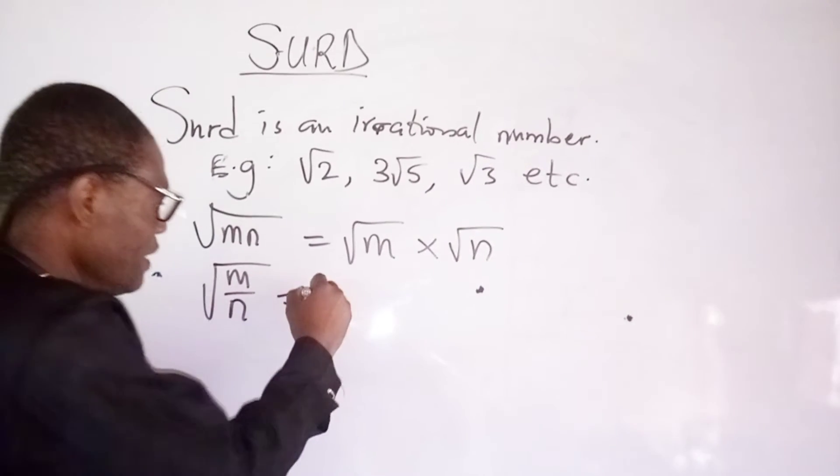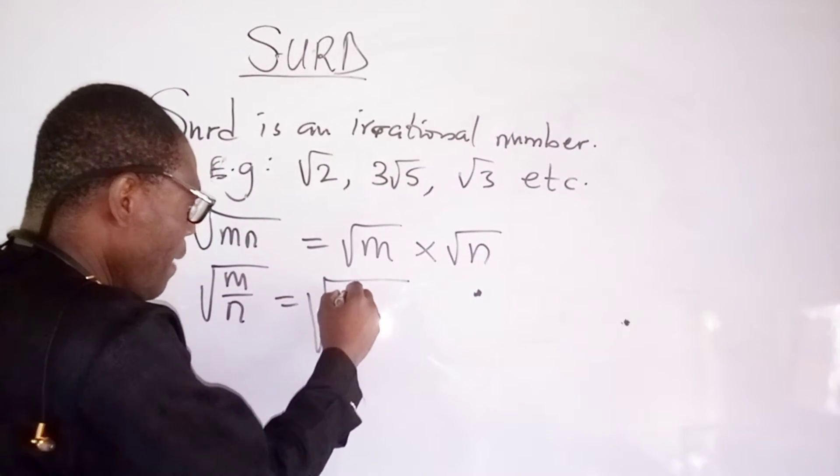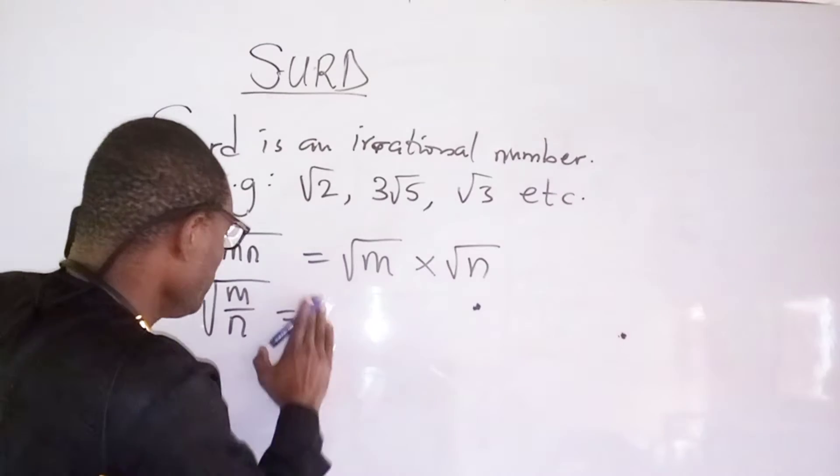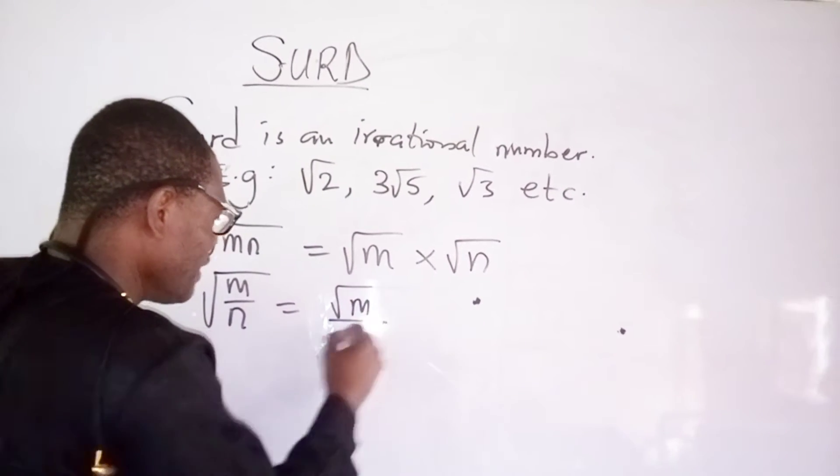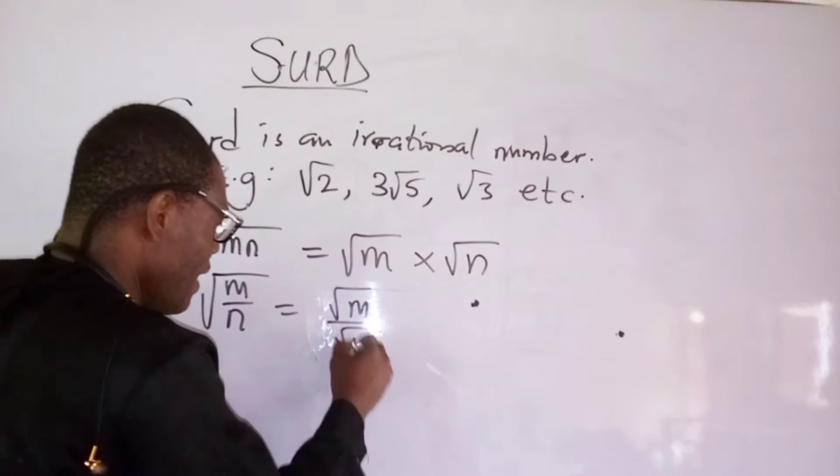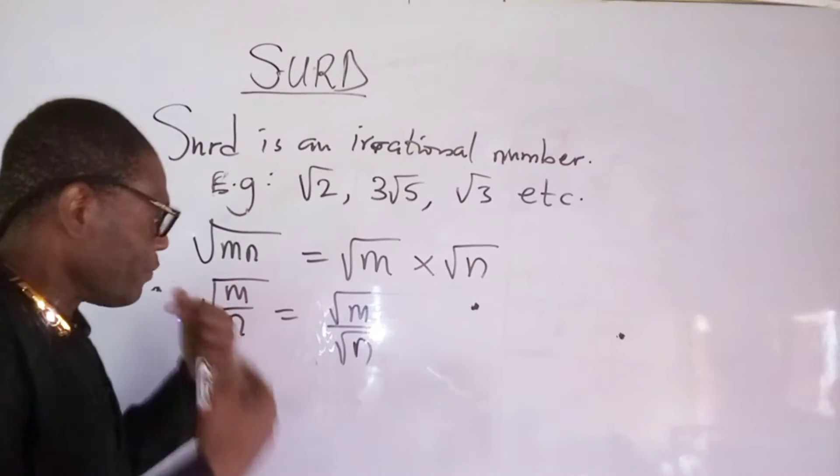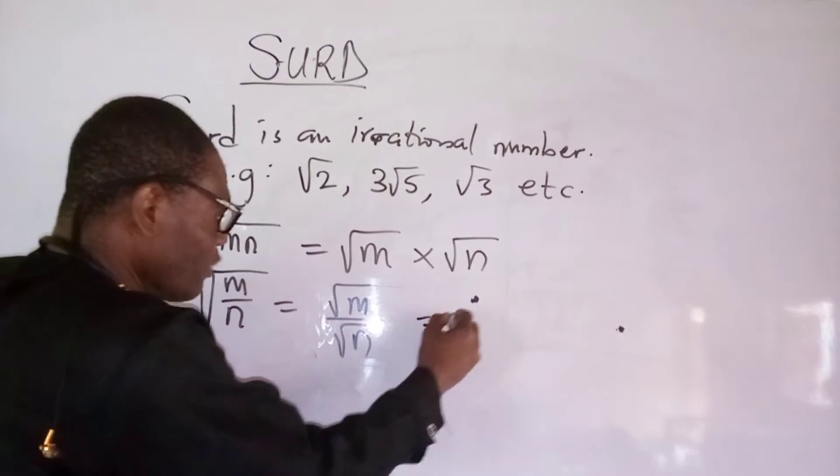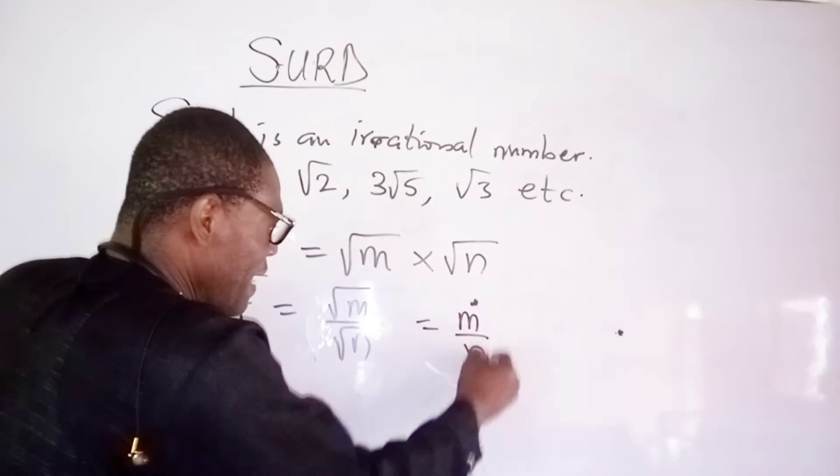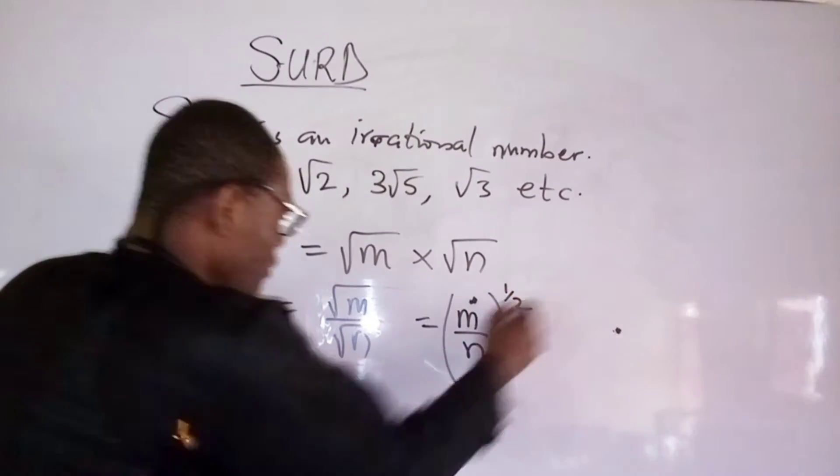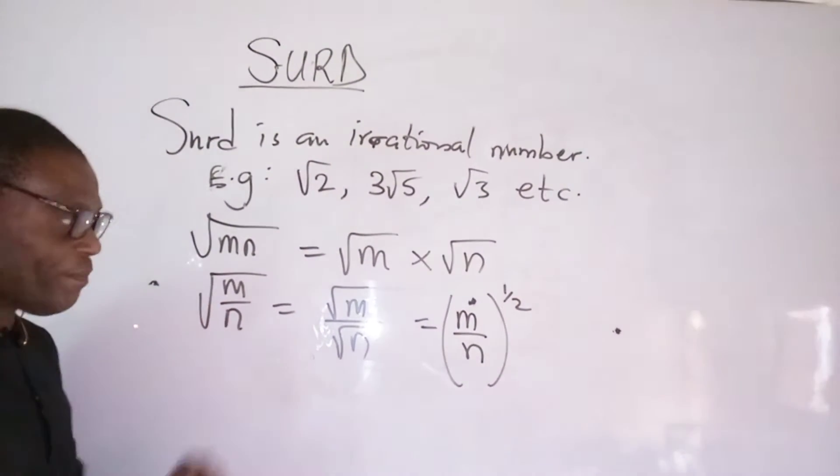it can also be square root of m divided by square root of n. And of course, this can also be m over n raised to one half because it's a square root.